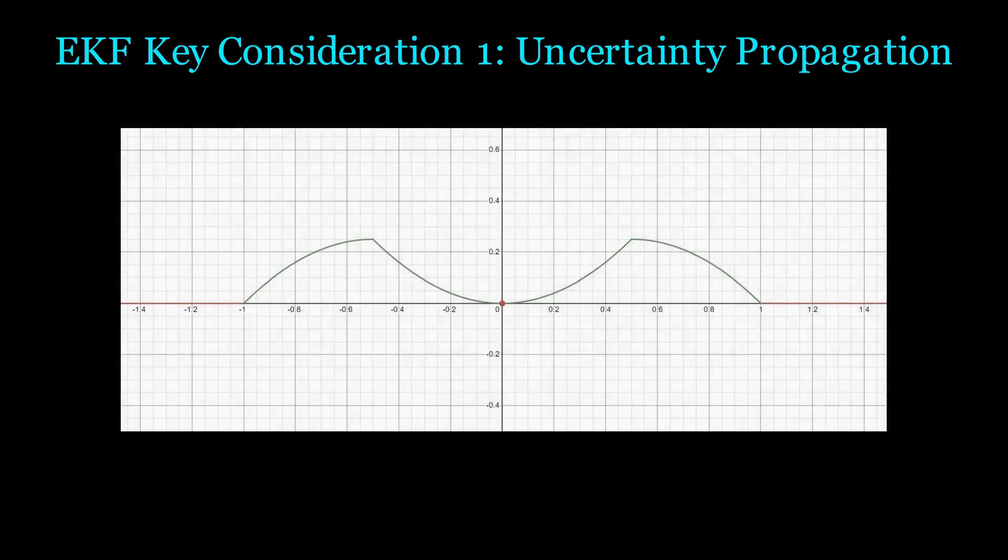Consider this case when the immediate local approximation at zero zero is poor, but the area farther away from this linearization point happens to be a good, in this case perfect, estimate of the actual function. This will result in a better EKF approximation with the larger variance input Gaussian distribution. However, this is a contrived case, which is why I say in general, larger variances tend to be worse when we consider any possible nonlinear function.